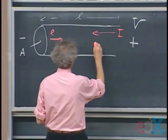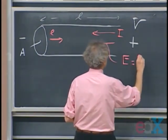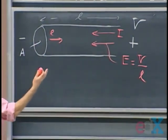And so the electric field in here, which is in this direction, that electric field is approximately V divided by L, potential difference divided by distance.